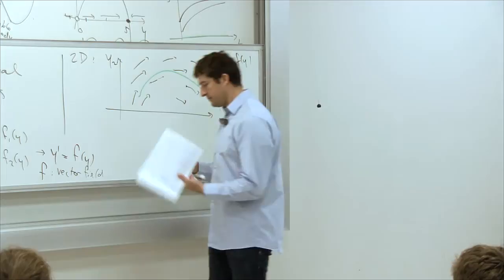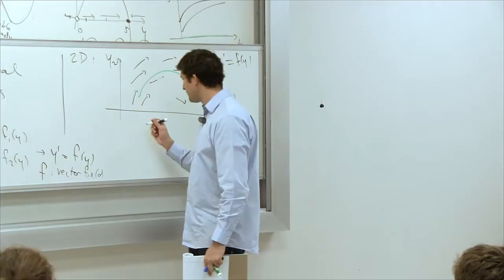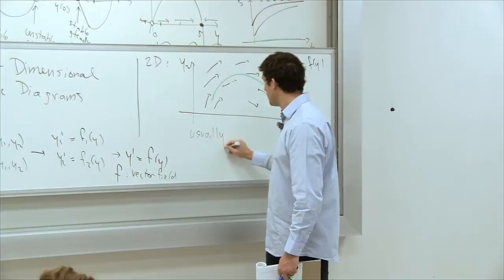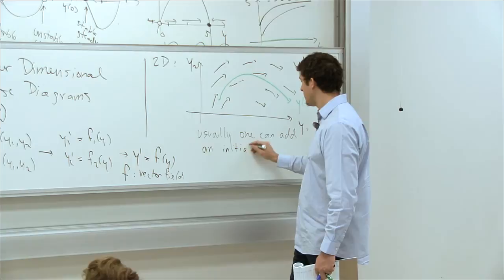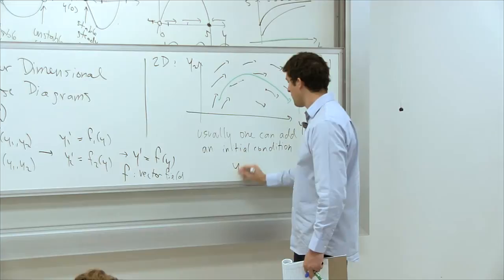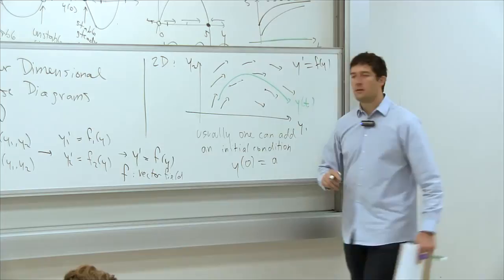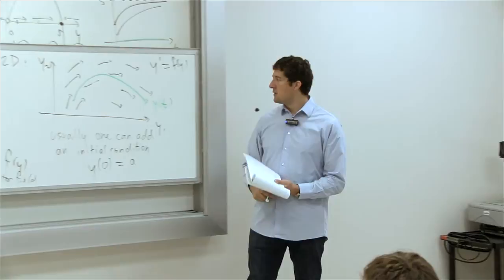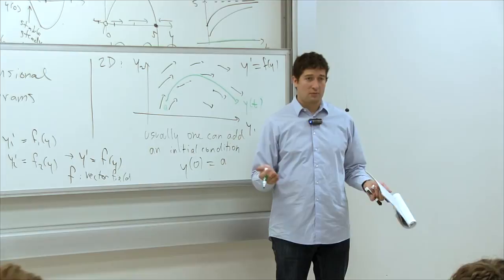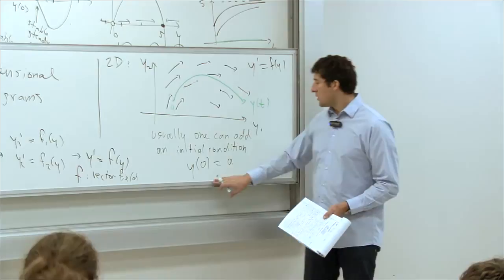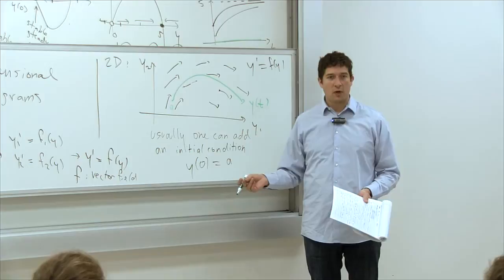We can add an initial condition: y of zero equals a, specifying where the particle is at time zero. With a different initial condition, you get a different solution. This equation together with the initial condition restricts the problem to a single solution, a single trajectory.